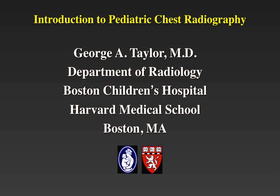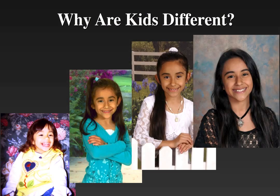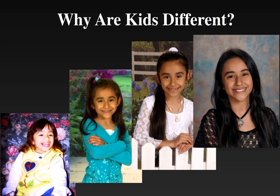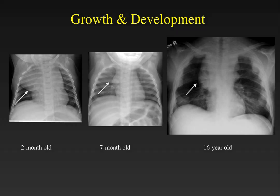This is an introduction to the interpretation of the pediatric chest X-ray with a specific focus on a systematic approach. What's different about children compared to adults? Besides the change in size that we see in the growth of a young girl, there's also a maturation of normal structures that are clearly evident in the pediatric chest X-ray. We will look at the differences in growth and development from the young child to the older child.